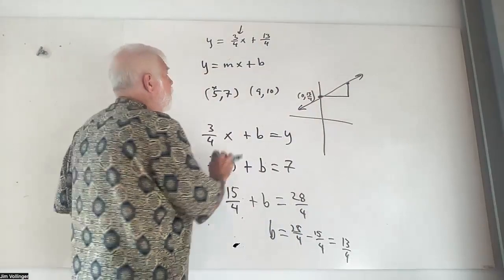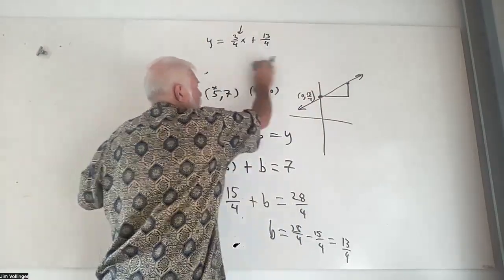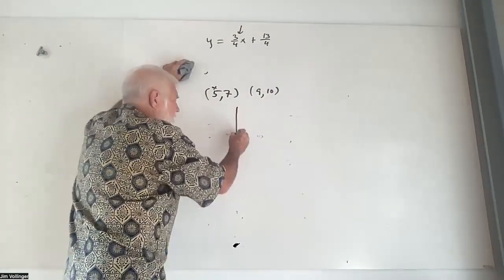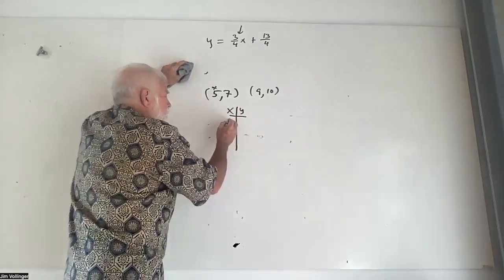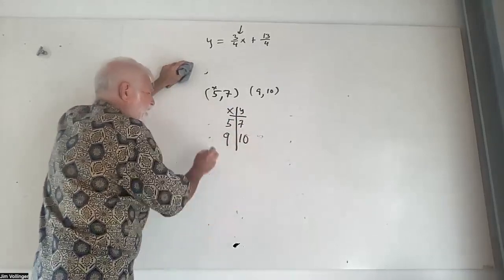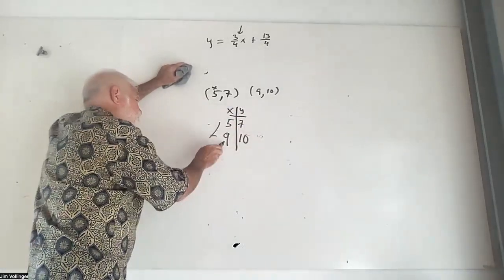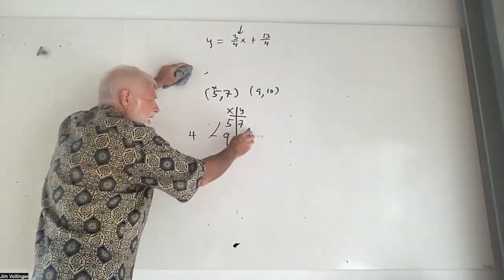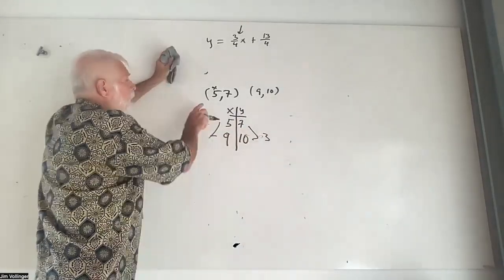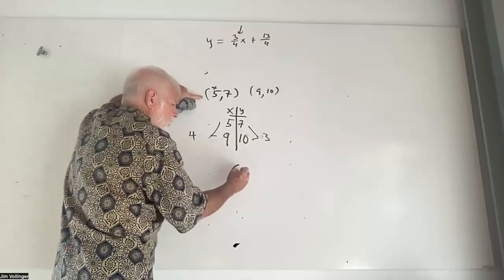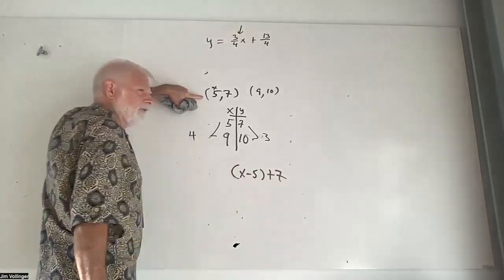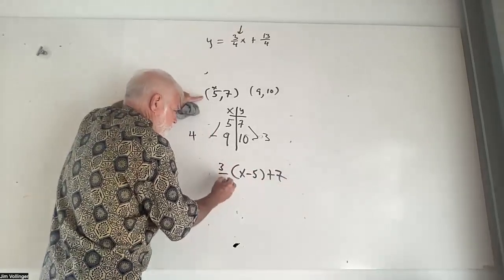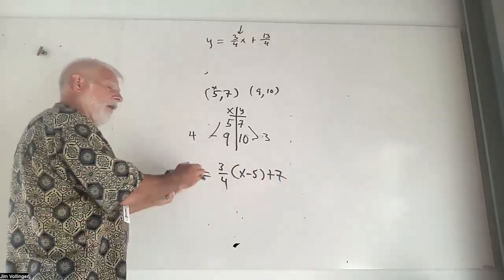Now let's write the equation of a line the way we've been writing it. Some of you are still having a little trouble, so my first suggestion is to rewrite it in tabular form: 5 gets you 7, 9 gets you 10. It's easier to see the changes. Don't do X2 minus X1 — just say, from 5, how do I get to 9? Four units. From 7, how do I get to 10? Up 3. We take the first coordinate, get rid of the first number, bring in the second as a principle of conversion, and look at the changes to write three-fourths.